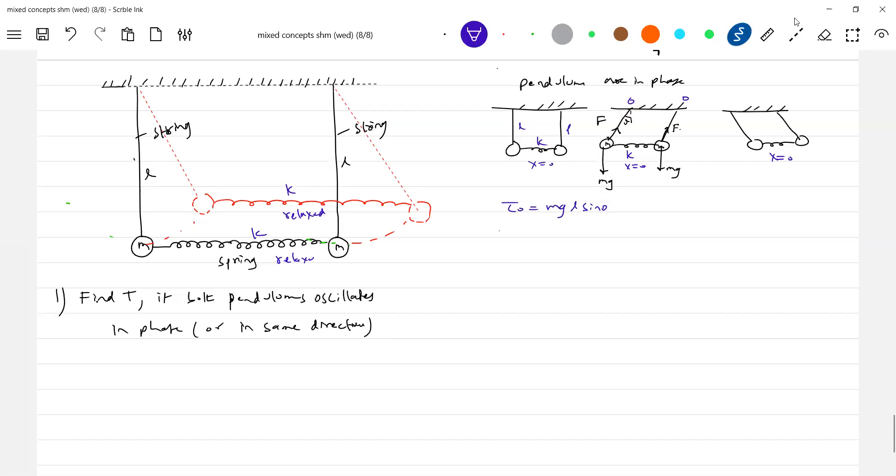Therefore this should be equal to I₀α equals MgL sin θ. This will be mL²α. Therefore α equals g/L times θ. This will be the time period. Fine, there won't be any much difference. When it is oscillating, the spring will be relaxed. This is the basic idea of the problem.